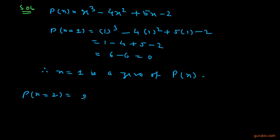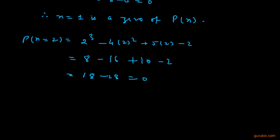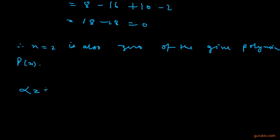Now we shall check for x equals 2: we get 2³ minus 4 into 2² plus 5 into 2 minus 2, which gives 8 minus 16 plus 10 minus 2, that is 18 minus 18, equals 0. Therefore x equals 2 is also a zero of the given polynomial p(x).